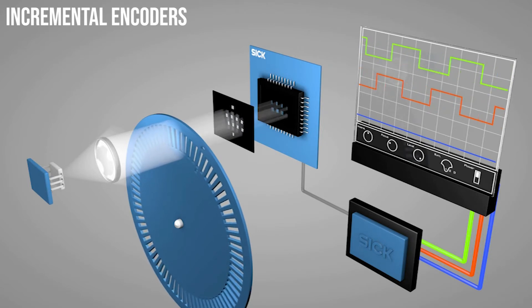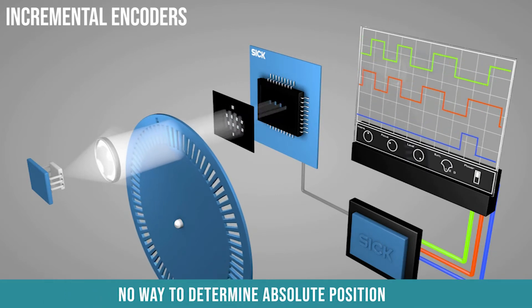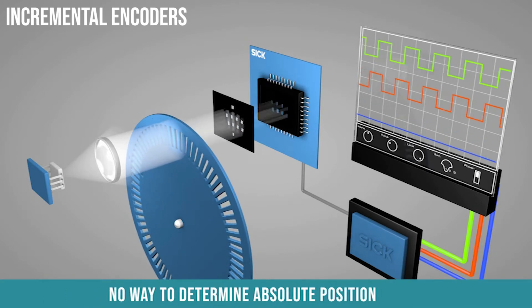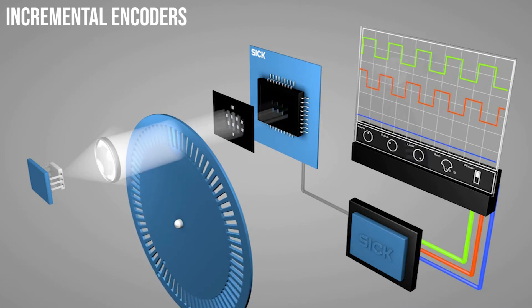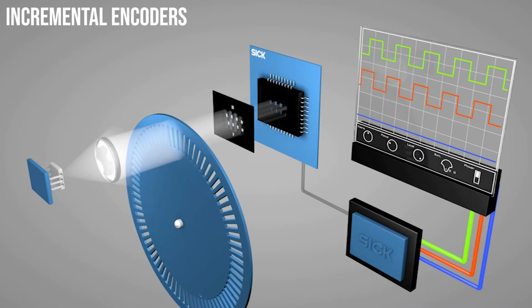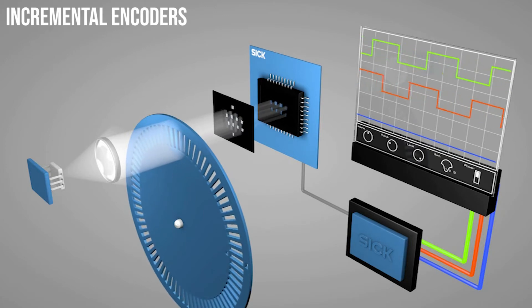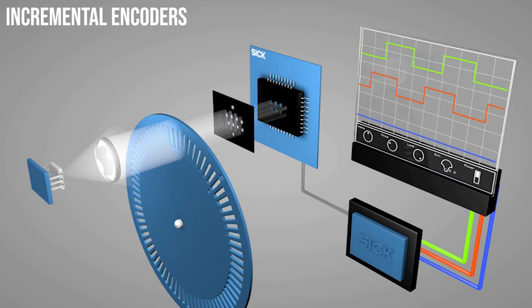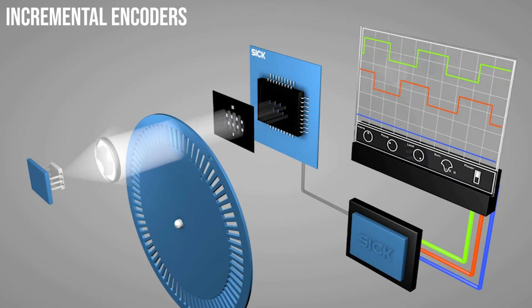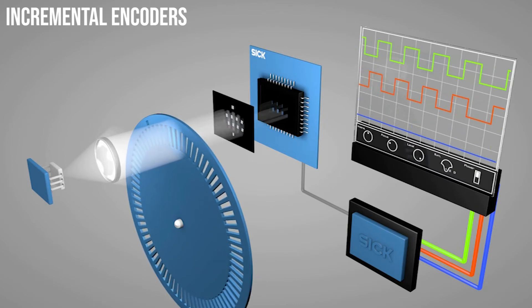The downfall to an incremental encoder is that there is no way to determine absolute position since it is just measuring incremental movements. For example, say this encoder was powered off. When the system came back on, there is no address or indication of where the encoder disk is in its rotation. This means that the zero or home position is lost when power is switched off and it must be reset when the encoder is powered back up.